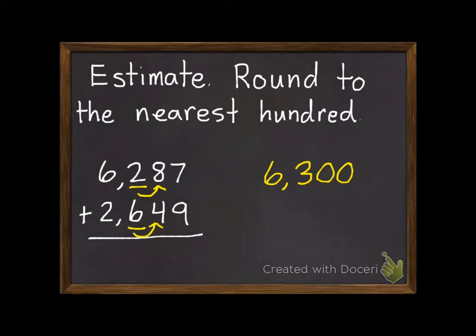Our second number, the hundred is a 6. The number after it is a 4 or less, so the 6 will stay the same. So I will have 2,600. Now we can just use mental math like we did earlier, and I can add these and get 8,900.